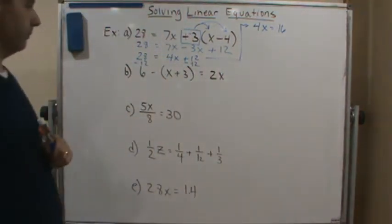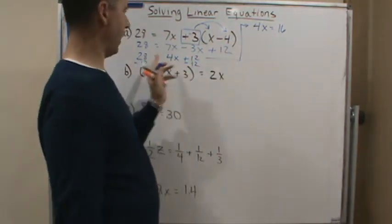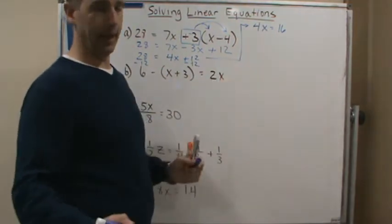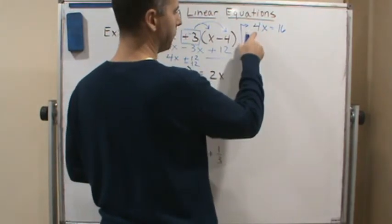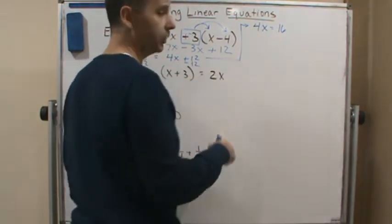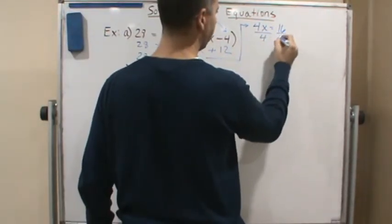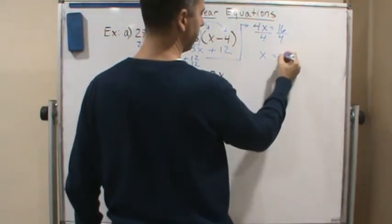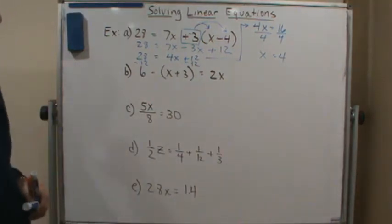I'm using the symmetry principle here — I just flipped it around, so I could have written 16 equals 4x; it's the same thing. Now I can either multiply both sides by the reciprocal of 4 or just divide by 4. I'll divide by 4: 4 divided by 4 is 1, so I get x equals 4. There's my answer — just following those steps.